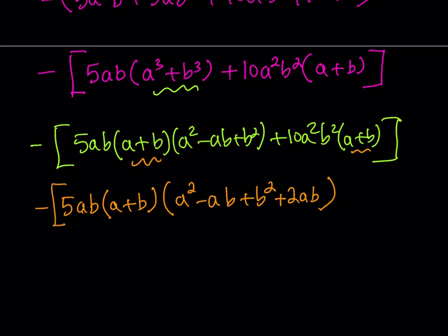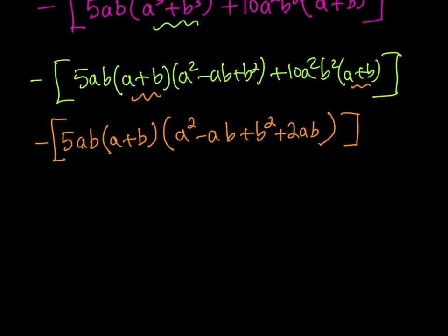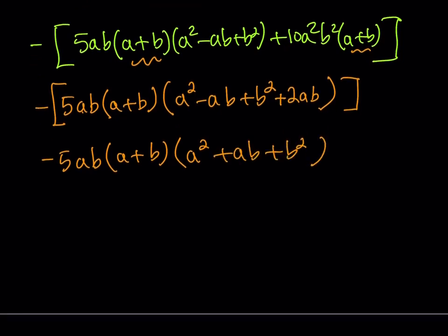So this is my expression, and it's pretty much factored, except for the fact that these are like terms, so I can go ahead and add them, and that should give me a squared plus a b plus b squared.